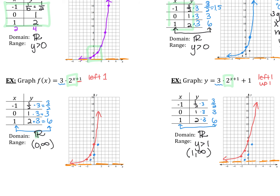The trickiest part about this one is remembering that when we shift the graph up 1, the horizontal asymptote also moves up. Shifting left and right doesn't impact the asymptote, but shifting the entire graph up also moves the horizontal asymptote up. So the vertical shift becomes my new range — if the graph shifts up 3, the range is from 3 to infinity; down 3, it's negative 3 to infinity.